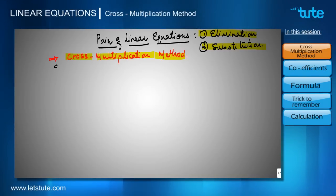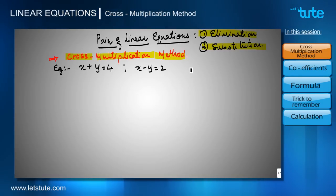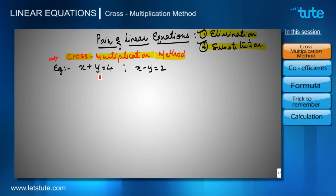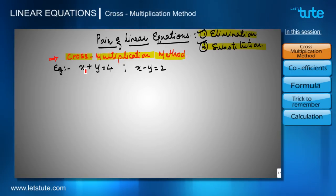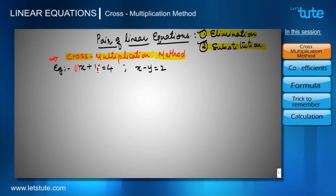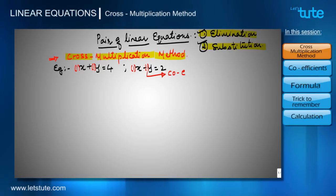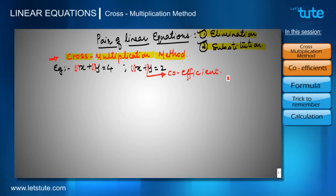For understanding this, let's take an example of a pair of linear equations. If you remember, we explained elimination method and substitution method using the same example. As we all know, variables in an equation are always attached to some constants. Similarly, here also in these equations, x and y are attached to some constants. These constants with the variables are called coefficients of those variables.